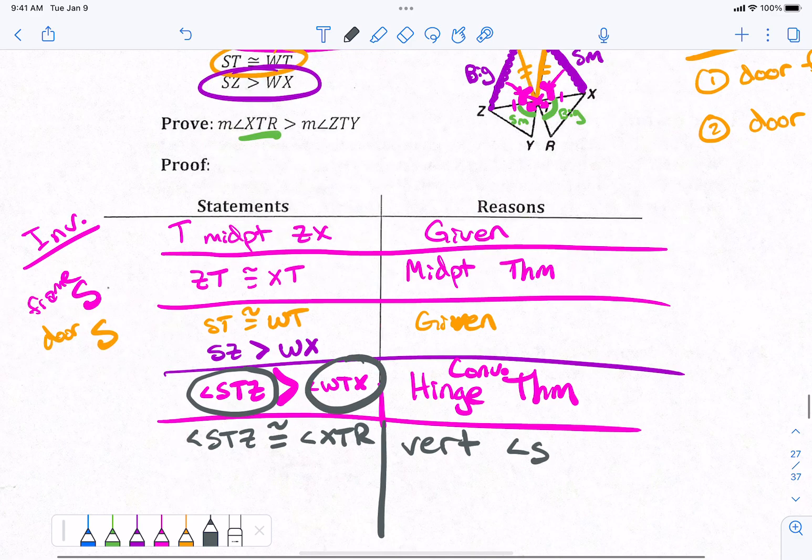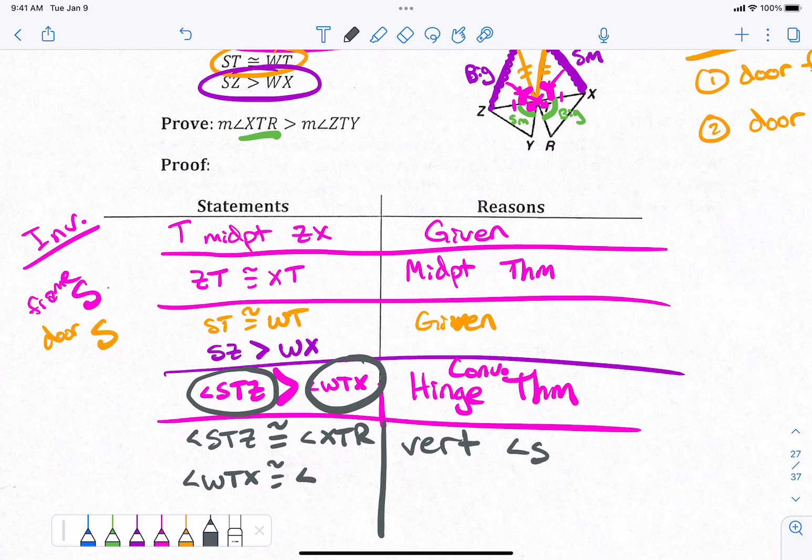Then we have WTX. Angle WTX is going to be the same size as angle ZTY. ZTY. Those are vertical angles. Okay? All right? Good?